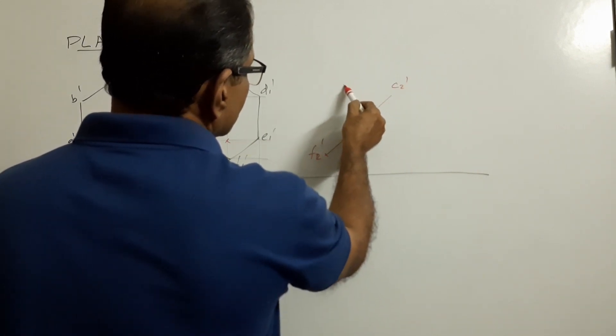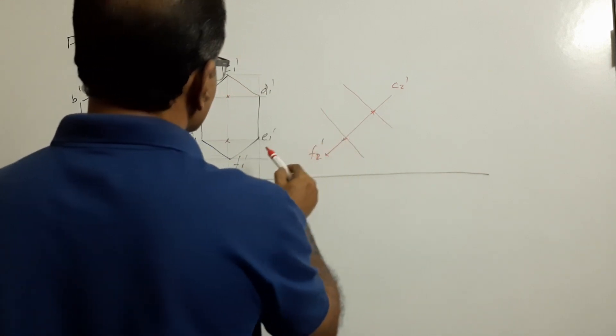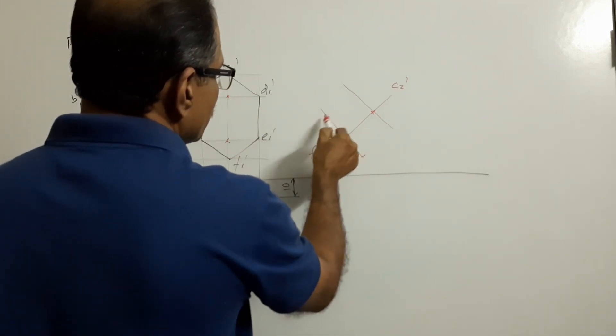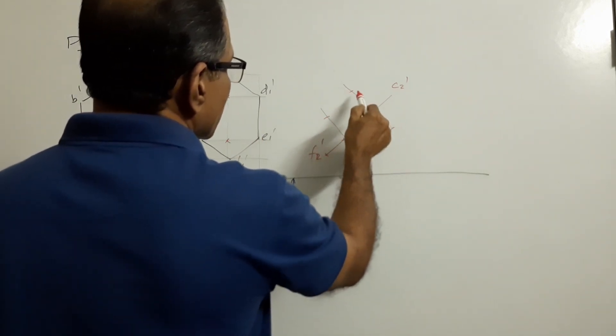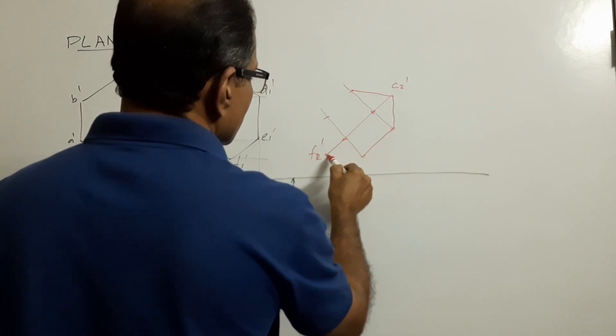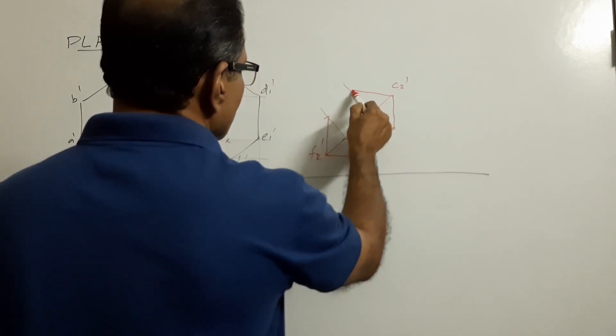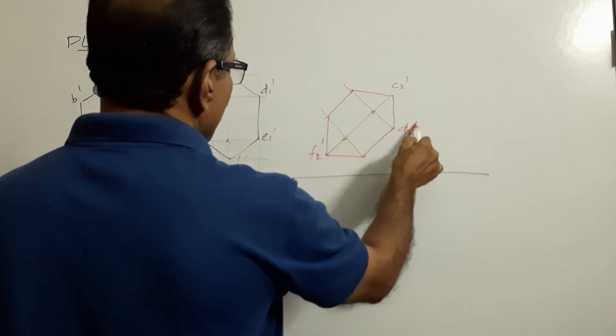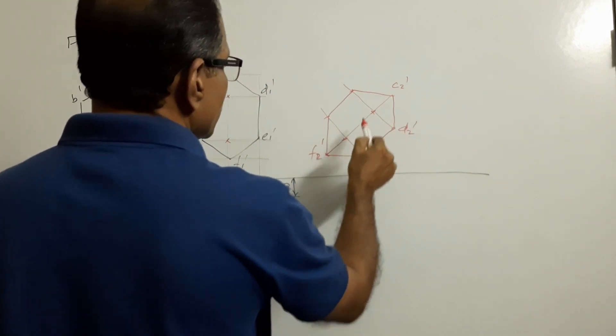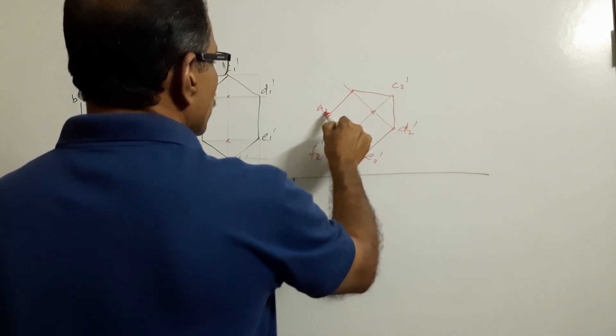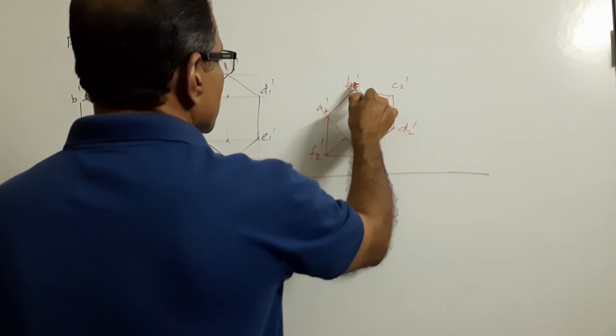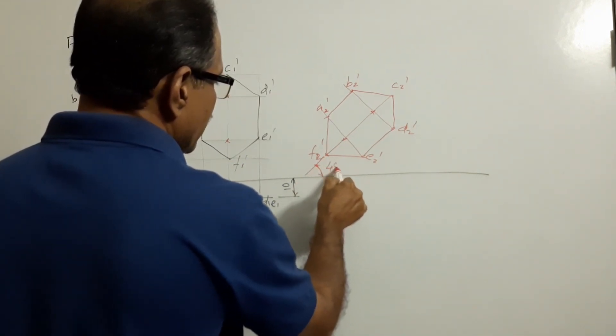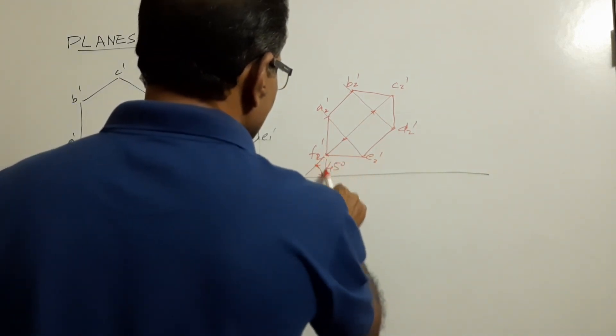Drop perpendiculars. This distance is equal to this distance, equal to this, equal to this. Mark them 0, 1, 2, 3, 4, 5.